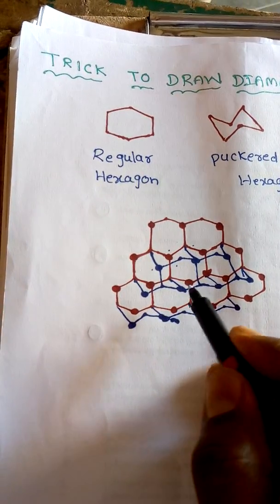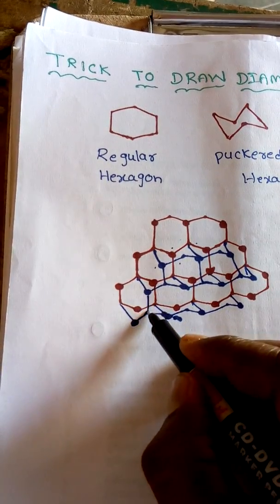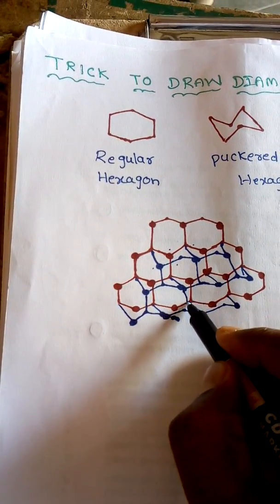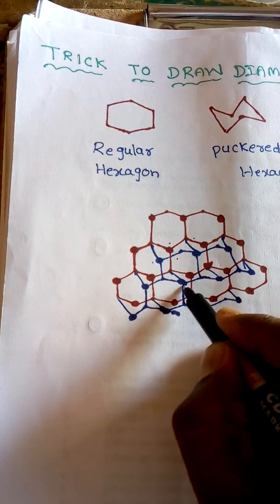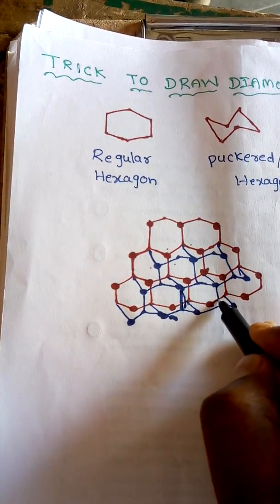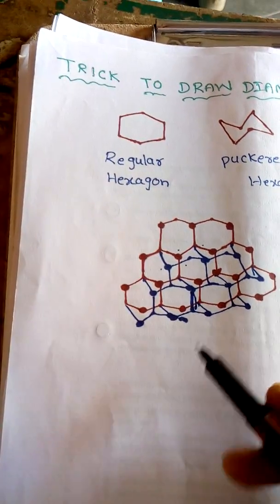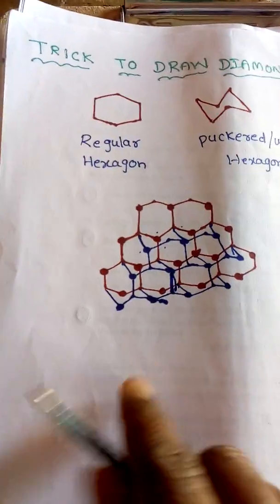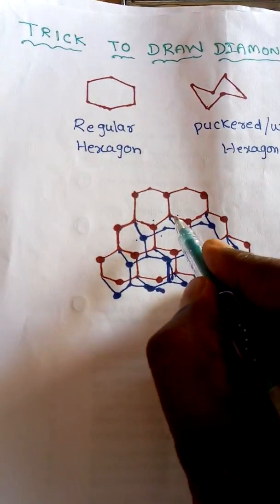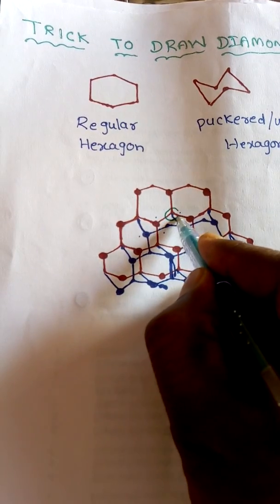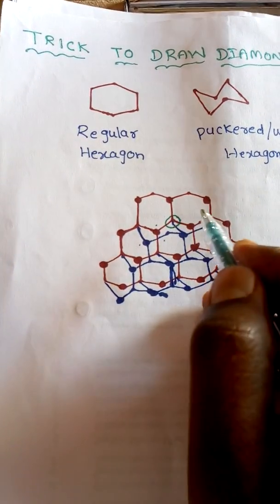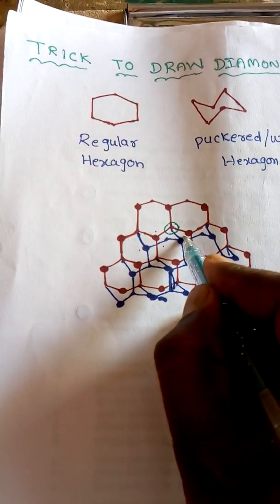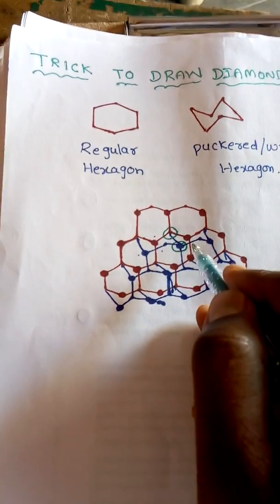And we have to drain the lower carbons. Now looking around this carbon, tetrahedron is formed. Around this carbon, tetrahedron is computed which is not marked. And around this carbon which is marked also,